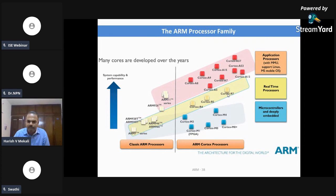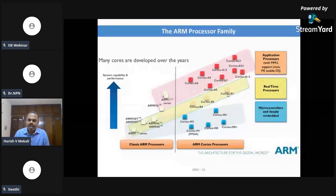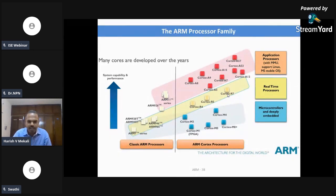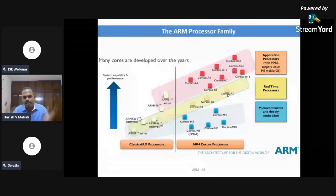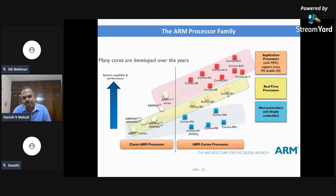Then there are microcontroller-based processors, called the Cortex M series, where timing is slightly flexible — plus or minus is okay. These are mostly used for home automation applications: for example, when you enter a room, the light should turn off, the projector should turn on, the screen should come down, temperature should be monitored, and the fan or AC should be controlled at a particular temperature. You need to monitor entry and exit of people, monitor temperature, and control fans and lights — these kinds of applications use Cortex M series.